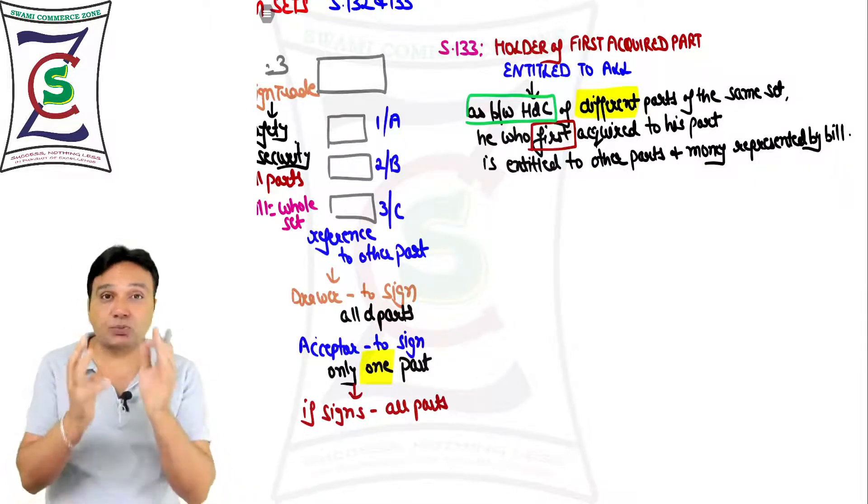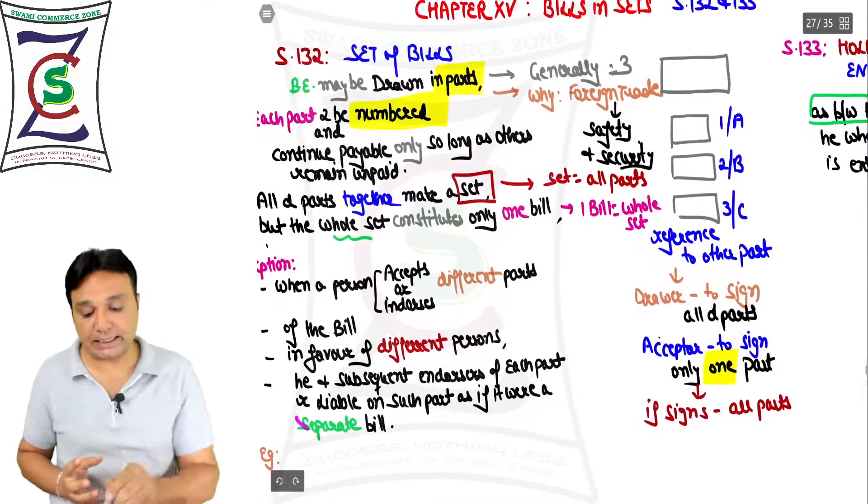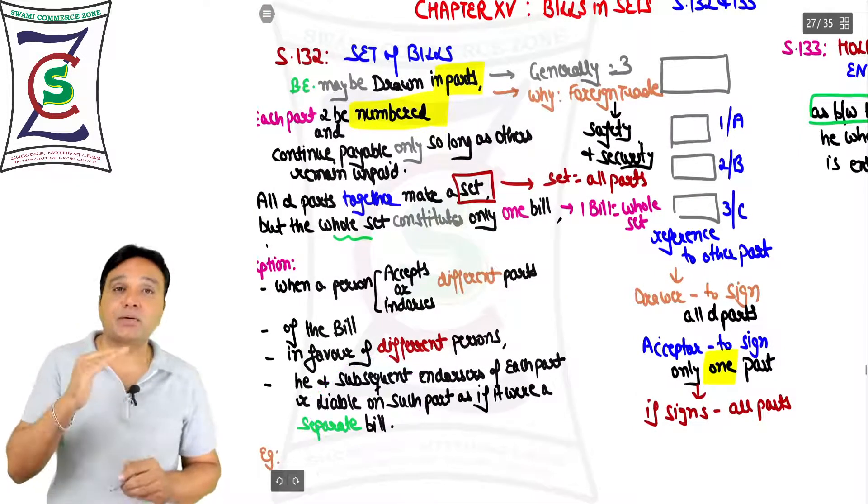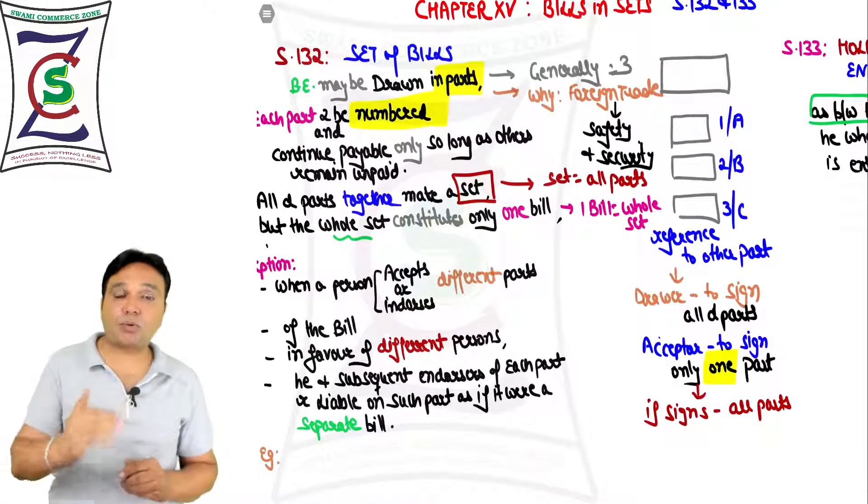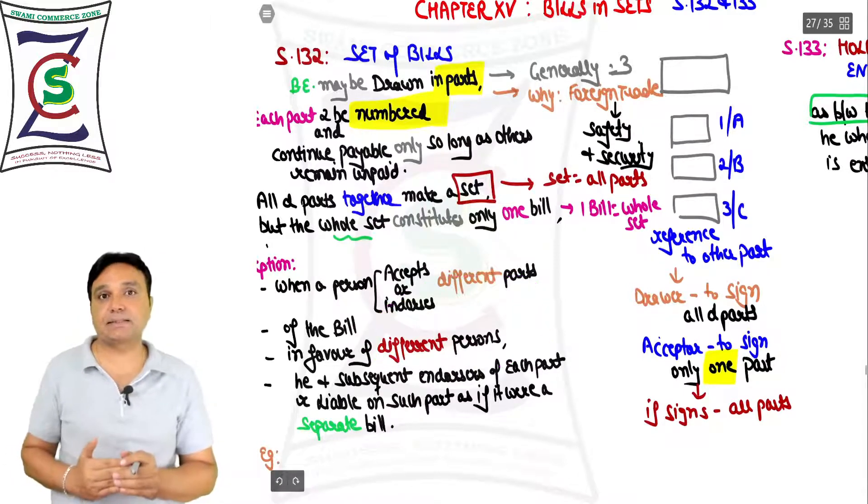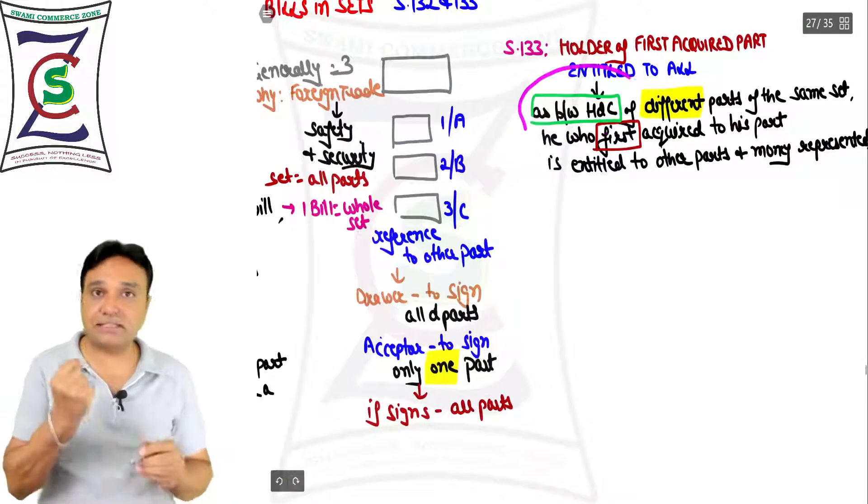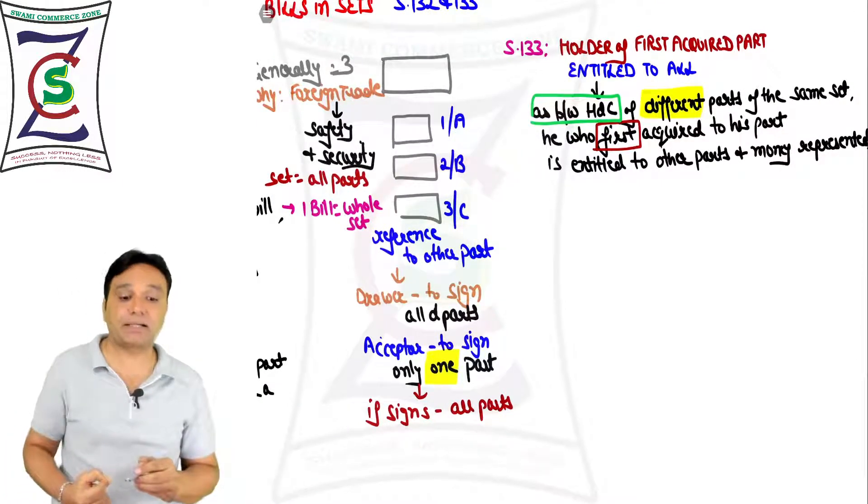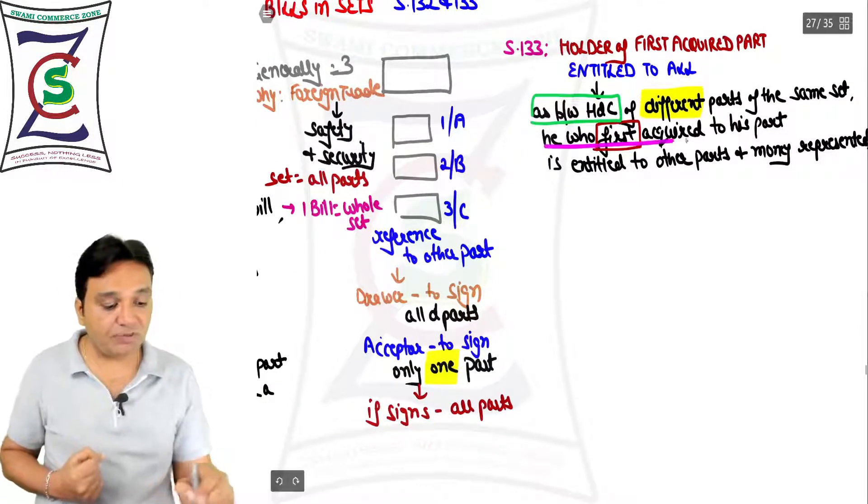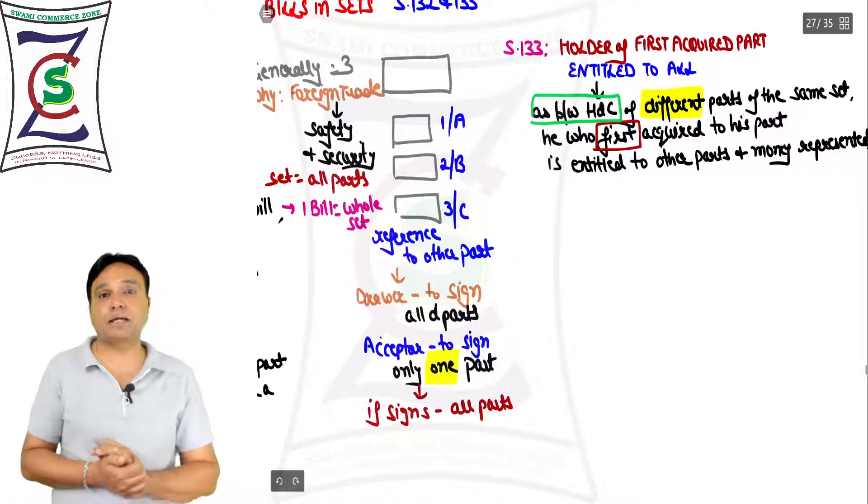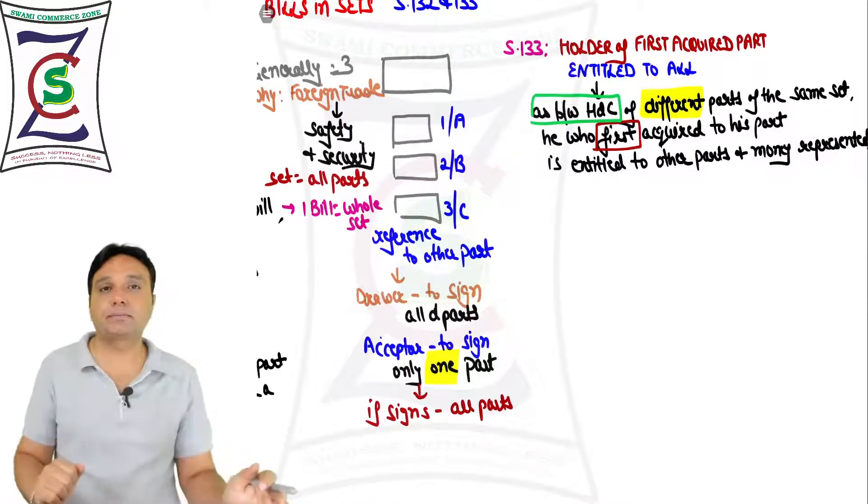At the end of the day, do not forget it's one bill. The only exception to treat it as separate bills was when acceptance was given on all the parts in favor of different persons. Otherwise it is one bill. The problem is it is in the hands of three persons. Who will get the payment? Law says he who first acquired it to his part, he will get the payment. Thank you.